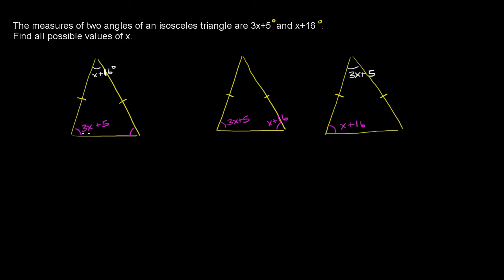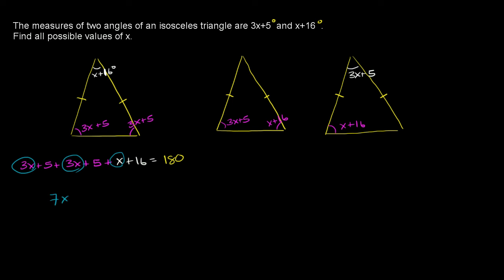So let's work through each of these. In the first situation, if this base angle is 3x plus 5, so is the other base angle. We know that all three angles are going to have to add up to 180 degrees. So we get 3x plus 5, plus 3x plus 5, plus x plus 16 is going to be equal to 180 degrees.